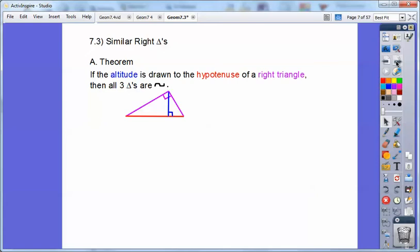Then all three triangles end up being similar. And note that little funny symbol means similar. I had to do that with my mouse, so it's kind of sloppy, but a little squiggly means similar.